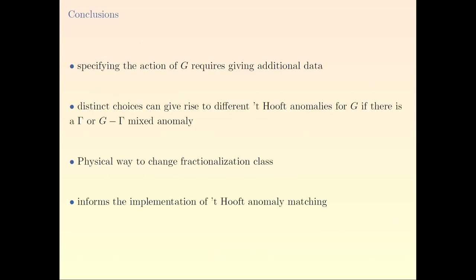Let me conclude. Specifying the action of a zero-form symmetry requires strictly more data than perhaps you could have thought. In general, distinct choices — fractionalization classes — can give rise to different 't Hooft anomalies for the zero-form symmetry, if there are one-form or mixed zero-form/one-form anomalies. We found a very physics-friendly way to implement these changes: either by adding massive particles that break the one-form symmetry, or by twisting by a gauge transformation. Given this broader picture of what the possible zero-form anomalies are, you have to revisit how 't Hooft anomaly matching works. Thank you again for all your guidance and support. Happy birthday.